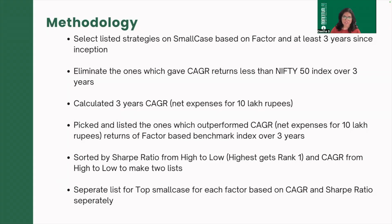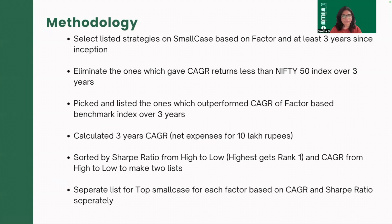Having listed all strategy-based factor smallcases with a minimum three-year period, the next step in the methodology is to see which smallcases could not even beat the Nifty 50 index. Nifty 50 is our first benchmark. We calculated the three-year CAGR of Nifty 50 and eliminated any smallcase strategies that were not able to beat it, irrespective of their factor.